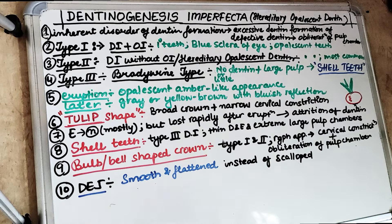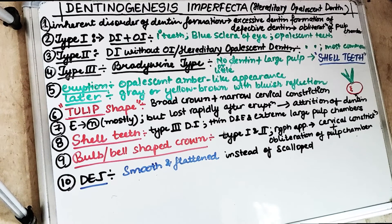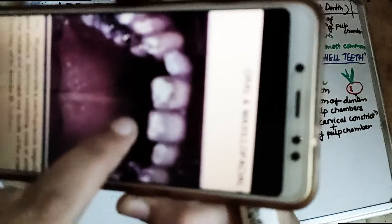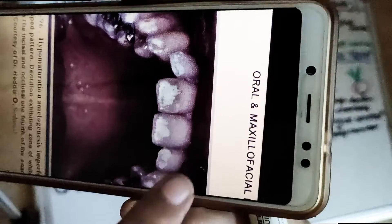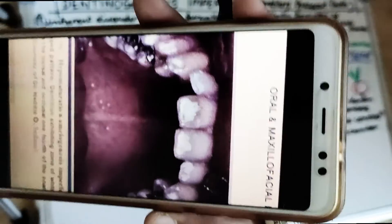So coming to Dentinogenesis Imperfecta — in the previous video we already talked about Amelogenesis Imperfecta. In the hypomaturation Amelogenesis Imperfecta stage, we talked about the snow cap appearance. I forgot to show you the picture earlier, so this is how a tooth appears with that snow-capped appearance.